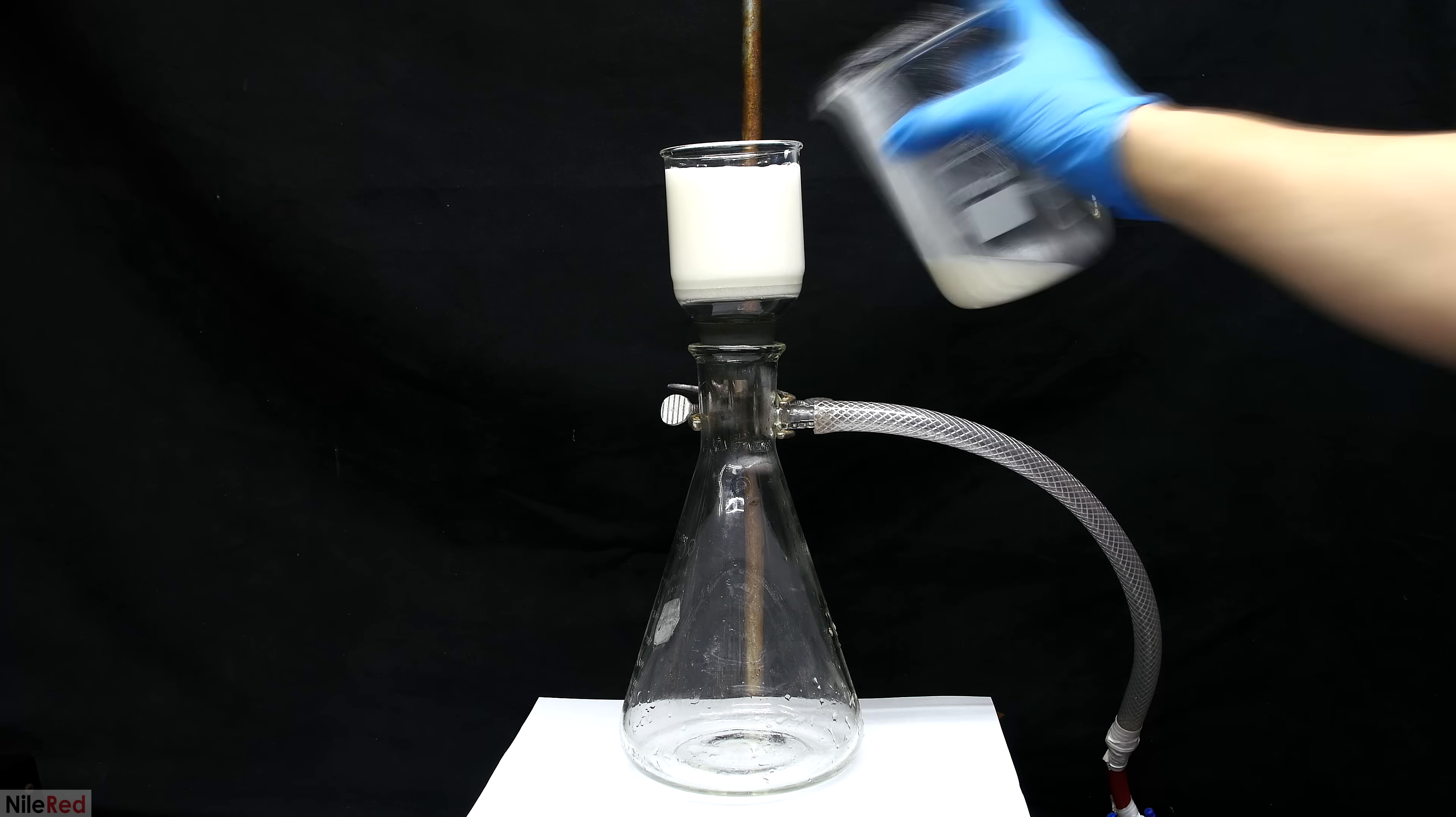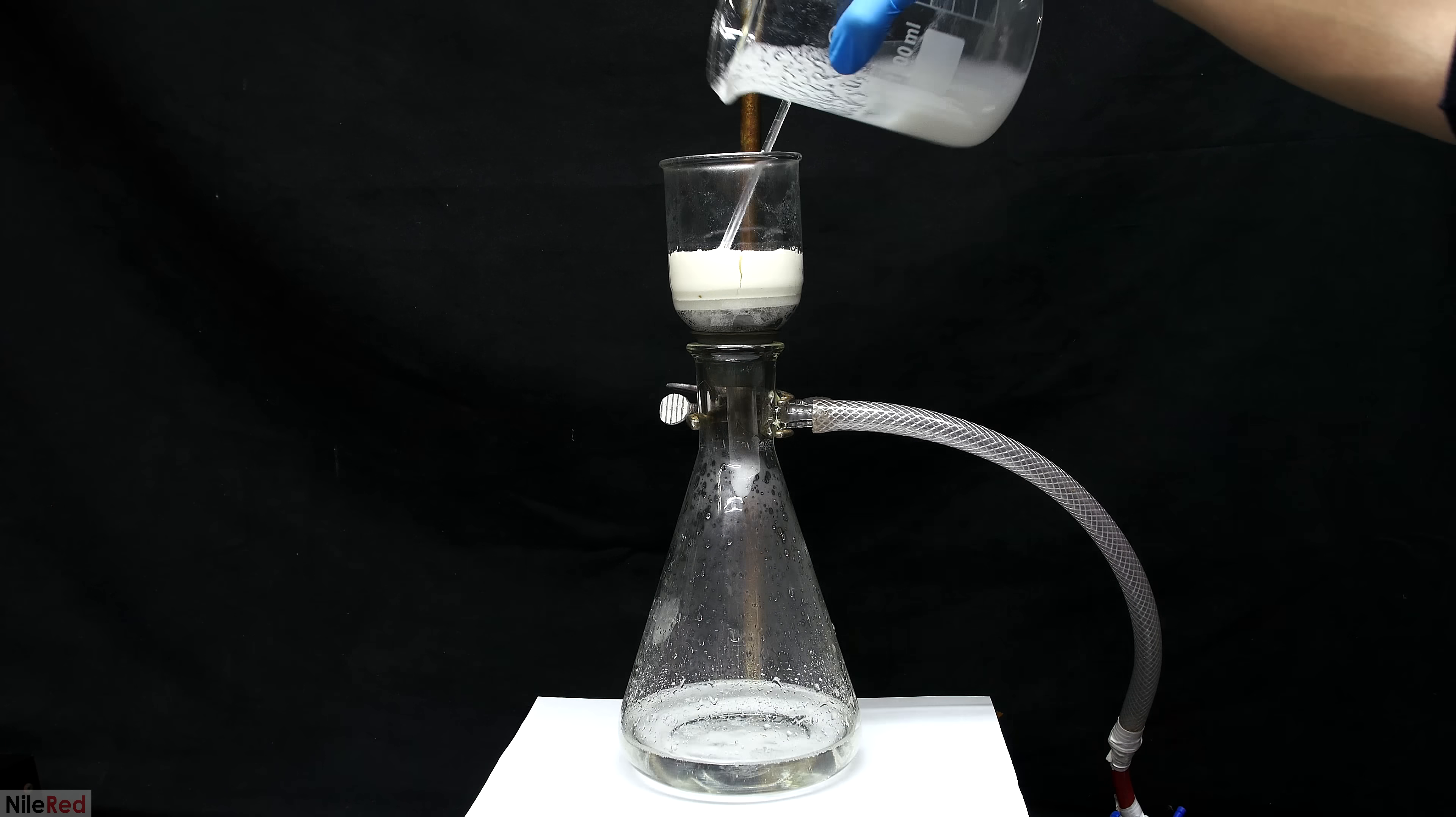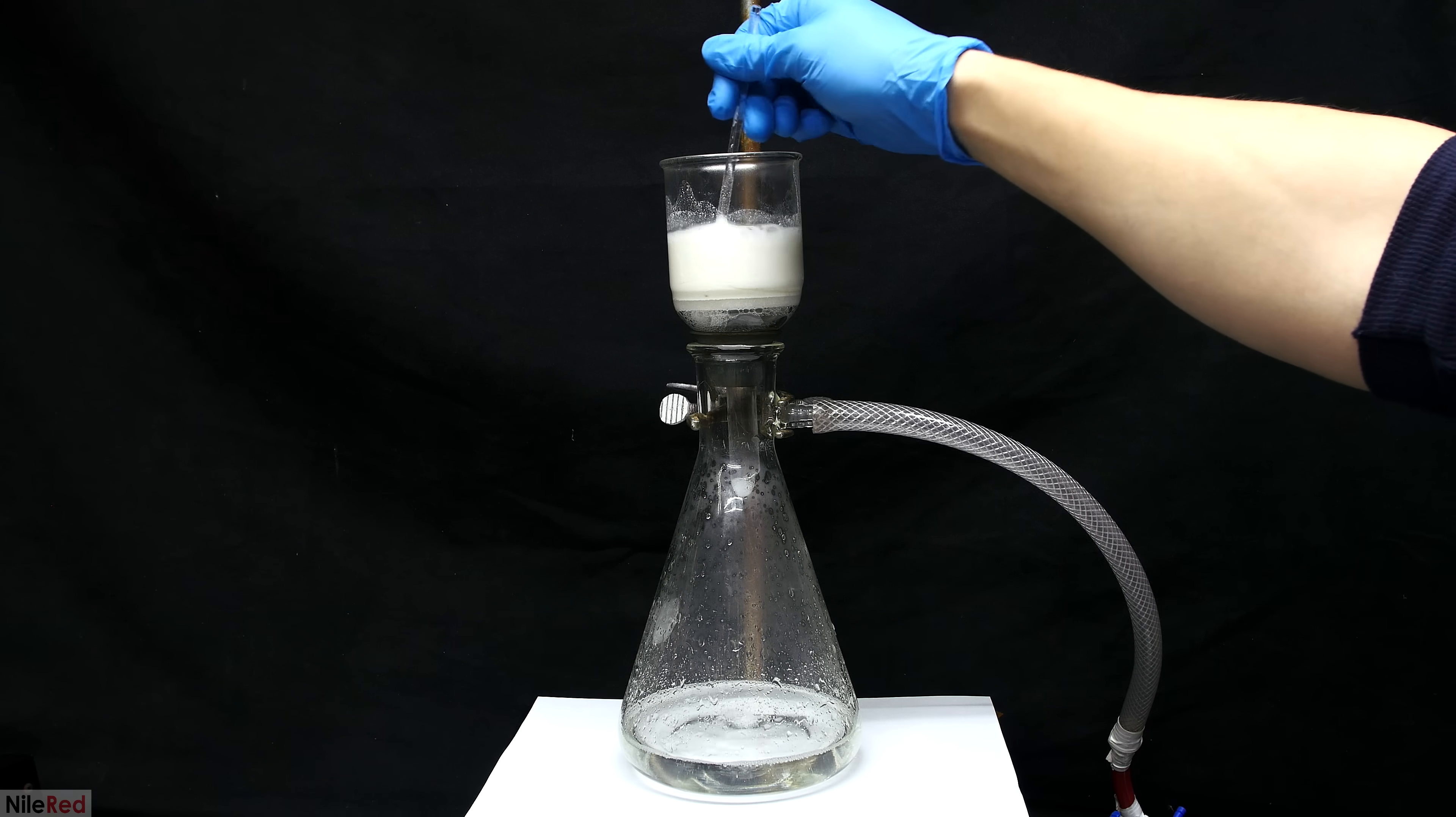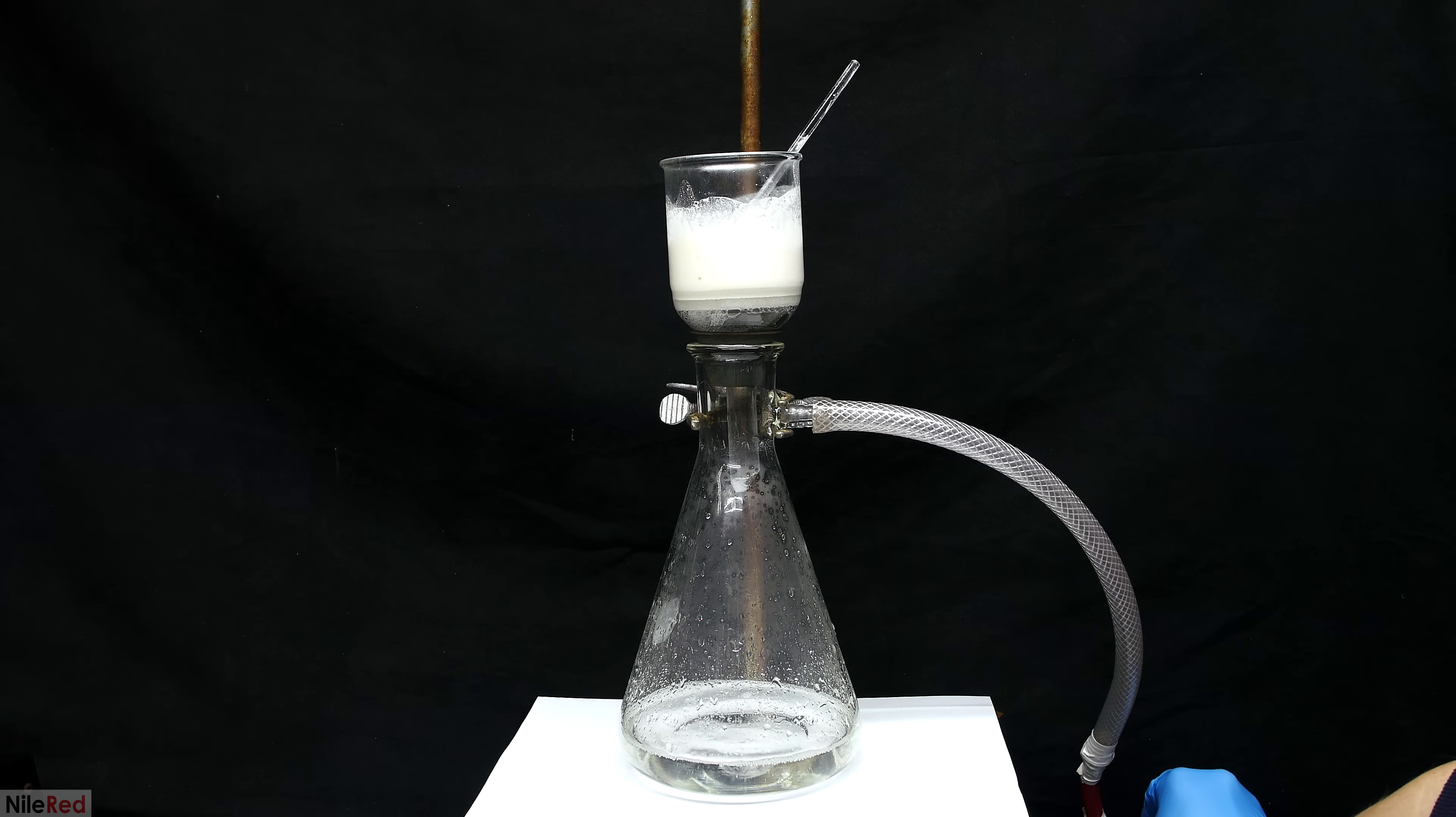I again went back to my trusty vacuum filter and I separated off the calcium sulfate. Even with the vacuum on full the filtering process is kind of slow. Once everything comes through though I use a little bit of water to wash the beaker and then I add it to the filter. Using the stir rod I mix things around to give the calcium sulfate a good wash. There might be some citric acid trapped in the calcium sulfate and this can help to pull it out.